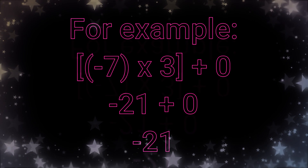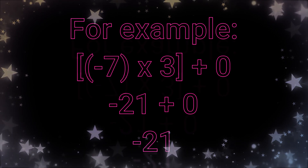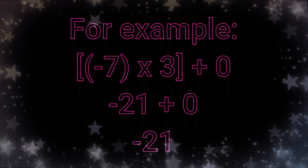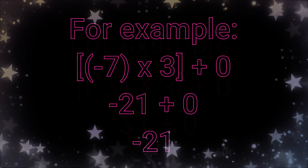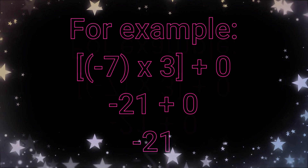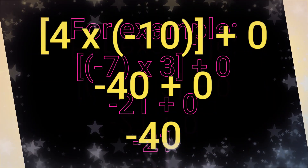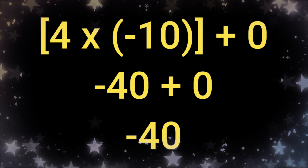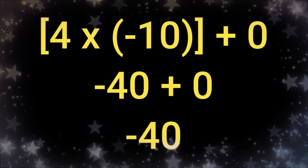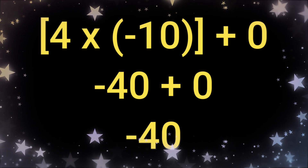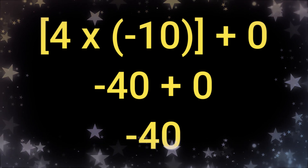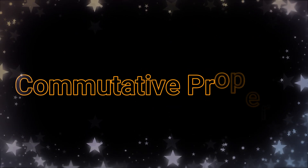For example, if you have negative 7 times 3 plus 0, so first you multiply negative 7 times 3, and the answer is negative 21. Added to 0, the answer is still negative 21. Another example: if you have 4 times negative 10 plus 0, the first thing you do is multiply 4 and negative 10, which gives you negative 40 plus 0, and the answer is still negative 40. Now, let's move on to the third property of integers, which is the commutative property.